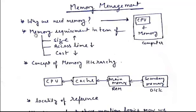The second topic we discuss here is memory requirements in terms of size, access time, and cost. When we talk about the size of memory, we need large memory because in today's scenario the processes are very high in size, so we need a huge amount of memory. But when we talk about access time, memory should be responsive — as we request data, the data should be available as fast as possible. So memory access time should be fast.